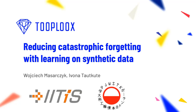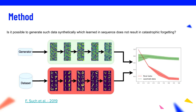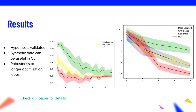Methods recently proposed in the continual learning field can be divided into three categories: architecture modification, regularization, and rehearsal methods. Our method tackles the problem of catastrophic forgetting from a different perspective, by modifying data instead of the model. Specifically, we ask: is it possible to generate data synthetically such that, when learned in sequence, it does not result in catastrophic forgetting? To create such data, we modified the method of generative teaching networks. The results prove our point — it is possible to reduce the effect of catastrophic forgetting without modifying the model. The plot on the left shows the robustness of generated synthetic data to the change of inner-loop training parameters.